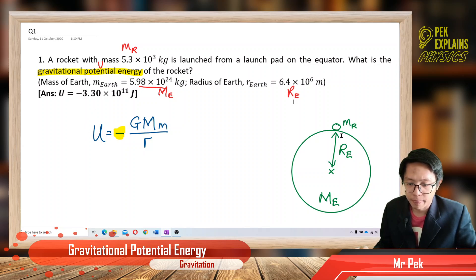So in the formula, if you look here, where is the rocket? The rocket is at the top here, on the surface of the Earth. How far is it from the center of Earth? Radius E.